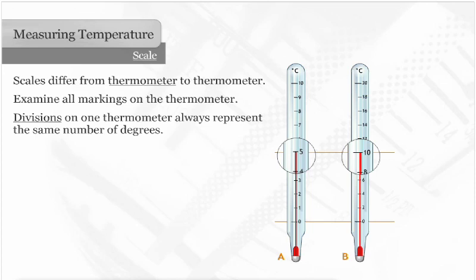The temperature reading of thermometer A is five degrees Celsius, and the reading of thermometer B is ten degrees Celsius.